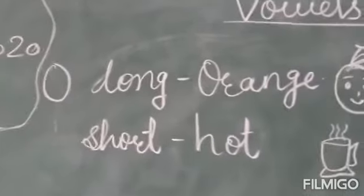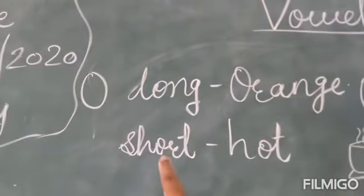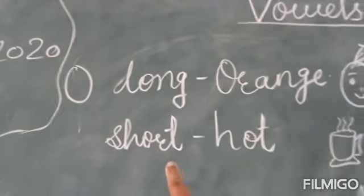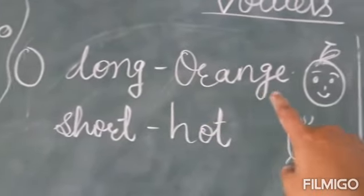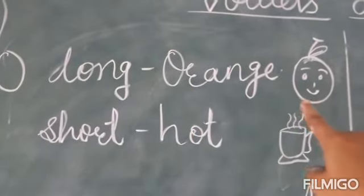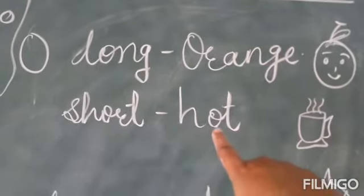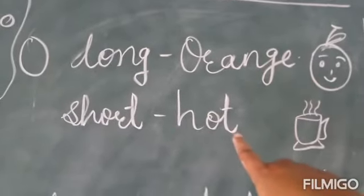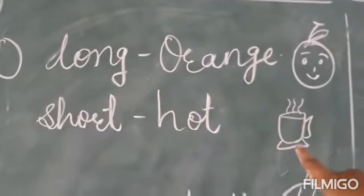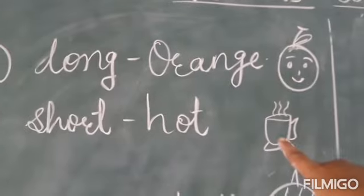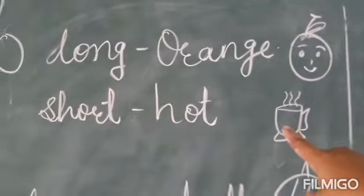Now O also has two sounds, long and short. The long sound of O is O, O, orange. The short sound of O is O, O, hot. Orange, hot. What is this? A cup. And what are we drinking in a cup? Tea or coffee. And how is the tea and coffee? Hot, isn't it?